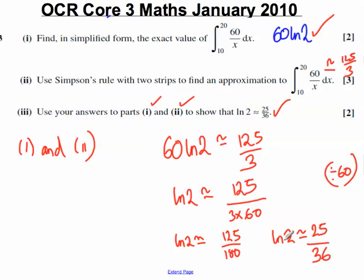And that's exactly what we want to get the answer to part 3. ln 2 is approximately equal to 25 over 36. Thank you very much.